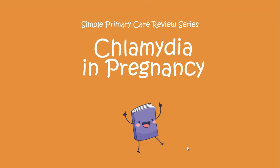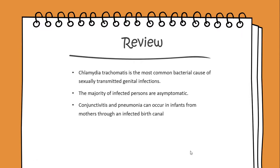Today we'll begin a simple primary care review on chlamydia in pregnancy. Chlamydia trachomatis is the most common bacterial cause of a sexually transmitted genital infection. The majority of infected persons are asymptomatic, and while conjunctivitis and pneumonia can occur in infants or mothers through an infected birth canal.